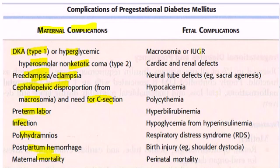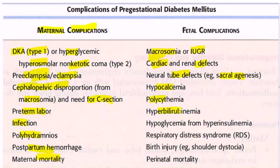For fetal complications: macrosomia or intrauterine growth restriction, cardiac and renal defects, neural tube defects, sacral agenesis, hypocalcemia, polycythemia, and hyperbilirubinemia.